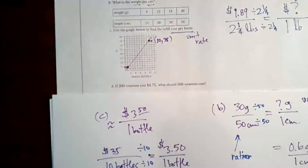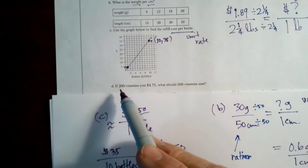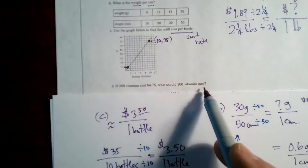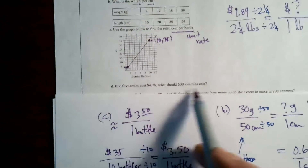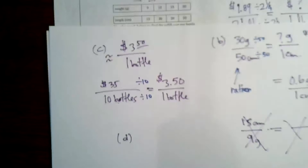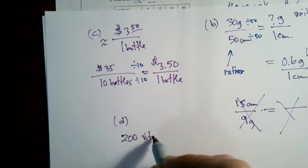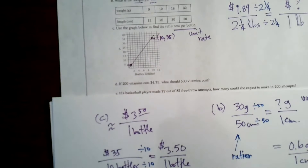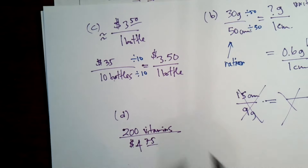Let's do part D. It says if 200 vitamins cost $4.75, what would 500 vitamins cost? So now we're not looking for a unit rate — we're looking to solve a proportion. I know that 200 vitamins for every $4.75.